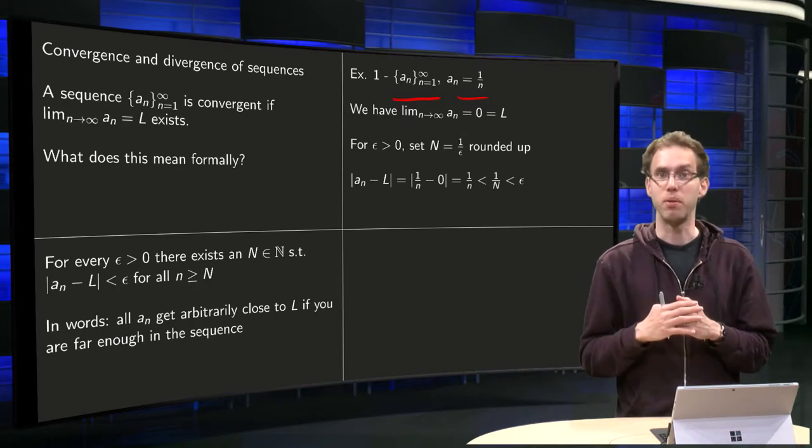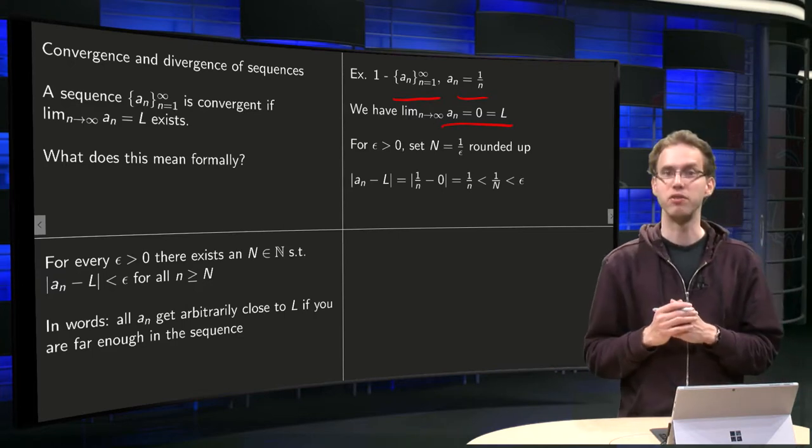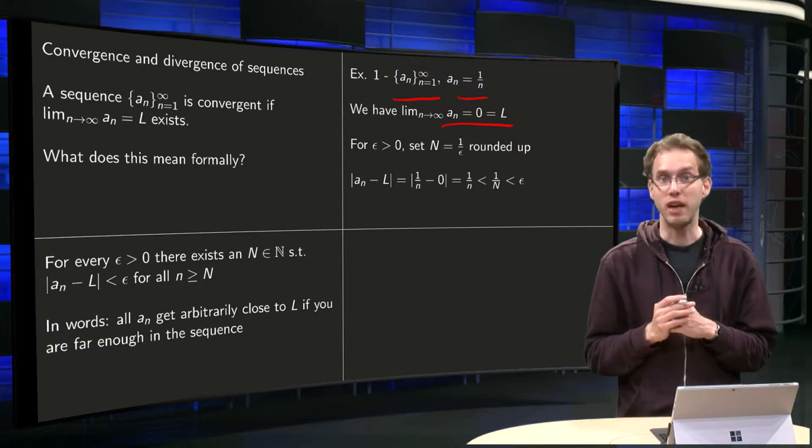So we have the limit a_n as n to infinity equals L equals 0. So how are we going to prove that?